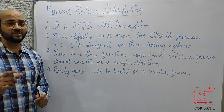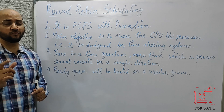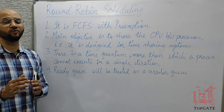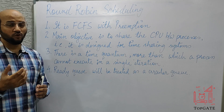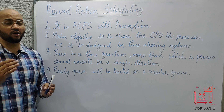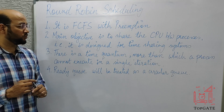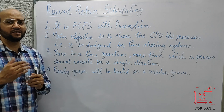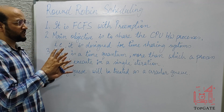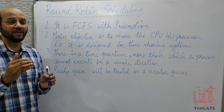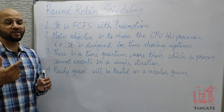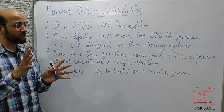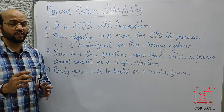If you go back to the previous lecture where I discussed FCFS scheduling, I told you that FCFS suffers from a problem called the convoy effect, in which processes with shorter burst time wait for processes with longer burst time. To address that, we follow a similar approach but schedule processes based on arrival time, with an added time quantum.